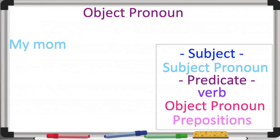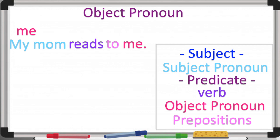Let's begin. 'My mom' — that's my subject — 'reads' — that's my verb — so my object pronoun can come anytime after this. 'To' — that's a preposition — 'me' — here it is. So in this case my object pronoun 'me' came after the preposition 'to.' My mom reads to me.